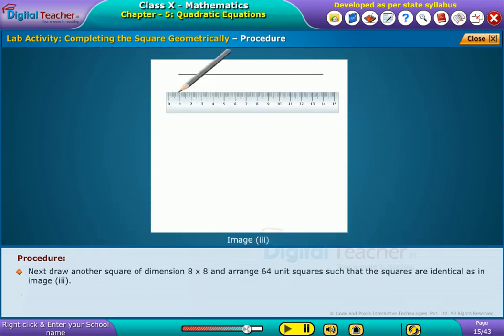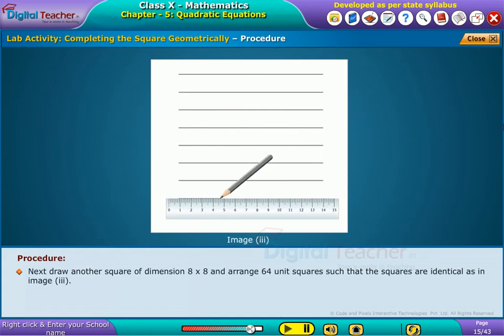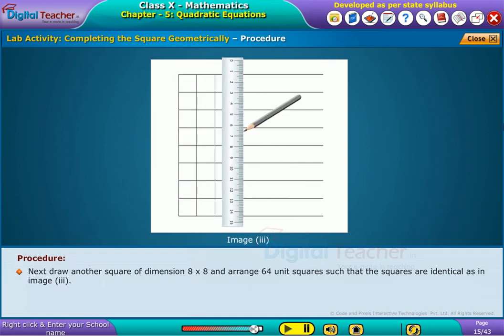Next, draw another square of dimension 8 by 8 and arrange 64 unit squares such that these squares are identical as in image three.